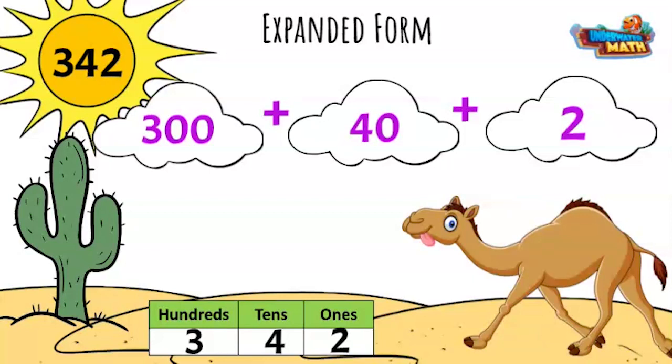342 written in expanded form looks like this: 300 plus 40 plus 2.